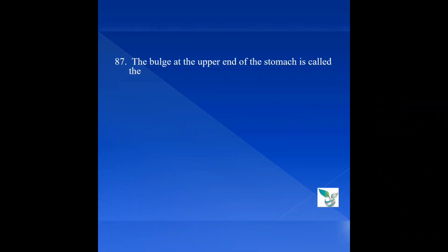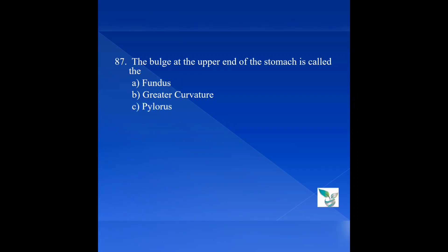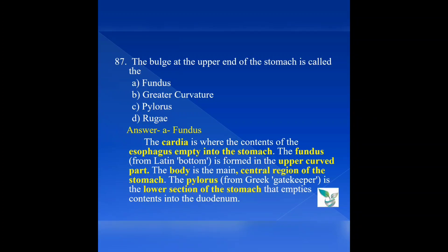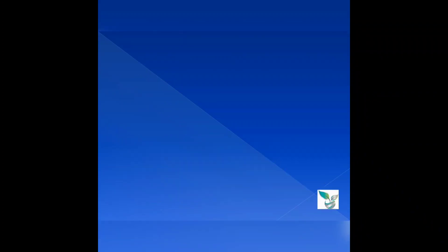Question number 87: The bulge at the upper end of the stomach is called — Option A: fundus. Option B: greater curvature. Option C: pylorus. Option D: rugae. The answer is option A, fundus. The cardia is where the contents of the esophagus empty into the stomach. The fundus, from the Latin word for bottom, is formed in the upper curved part. The body is the main central region of the stomach. The pylorus is the lower section that empties contents into the duodenum, which is the beginning of the small intestine.